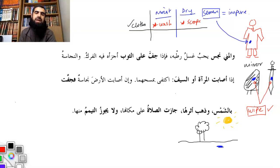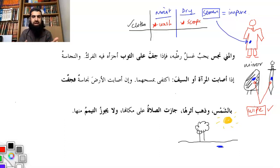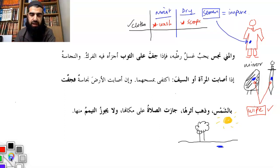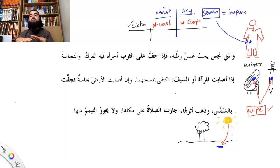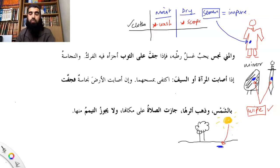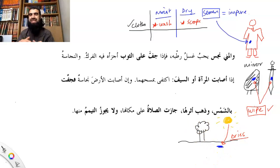The sun drying it out outdoors is considered a means of purification. However, if you put a cloth that had urine on it in the sun and it dried up, that does NOT count — you still have to clean it, because the impurity is still there. The fuqaha have differentiated between earth and other materials. Other materials need to be washed; earth is a totally different type of material and is exempted. So jazat al-salatu ala makaniha — you're allowed to pray salat on that place, as long as there's no smell or sign of urine. But you cannot do tayammum on that land.